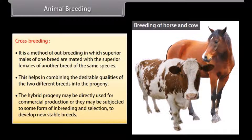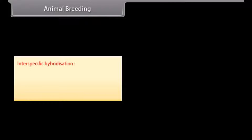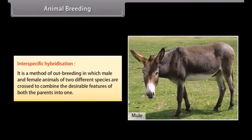The hybrid progeny may be directly used for commercial production, or they may be subjected to some form of inbreeding and selection to develop new stable breeds. One example of cross breeding is Hisardale, a new breed of sheep developed by crossing Bikaneri ewes and Merino rams. Interspecific hybridization is a method of outbreeding in which male and female animals of two different species are crossed to combine the desirable features of both parents into one.